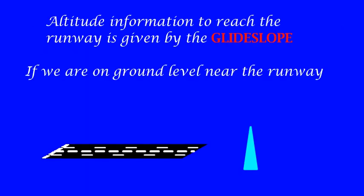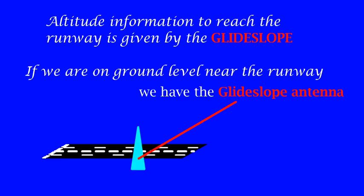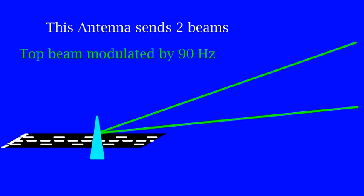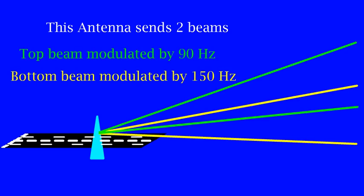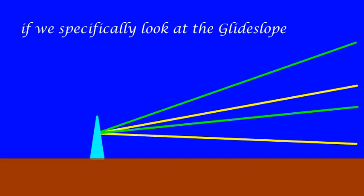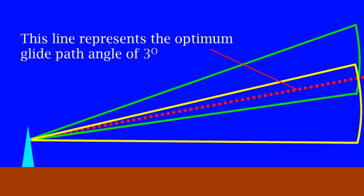Near the runway, we have something called the glide slope antenna. This antenna sends two beams. The top beam modulated by 90Hz, bottom beam by 150Hz. Where these beams overlap represents the optimum glide path angle of 3 degrees.